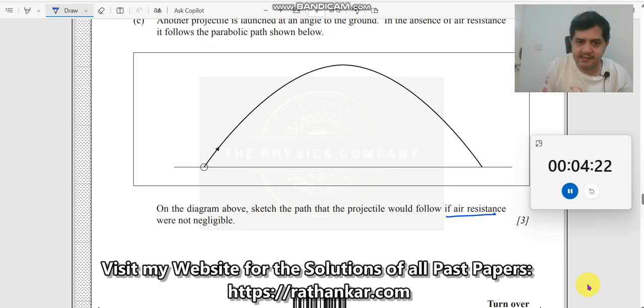On the diagram, sketch the path the projectile would follow if air resistance were not negligible, which means there is air resistance. What will happen if there is air resistance? The first thing is, there are three marks, so it should reveal three characteristics of the curve. The first one is it does not reach the maximum height. It might reach only until here. Secondly, the range will not be this much. It will not exactly come and fall here, but instead it will go like this, describing something like this.